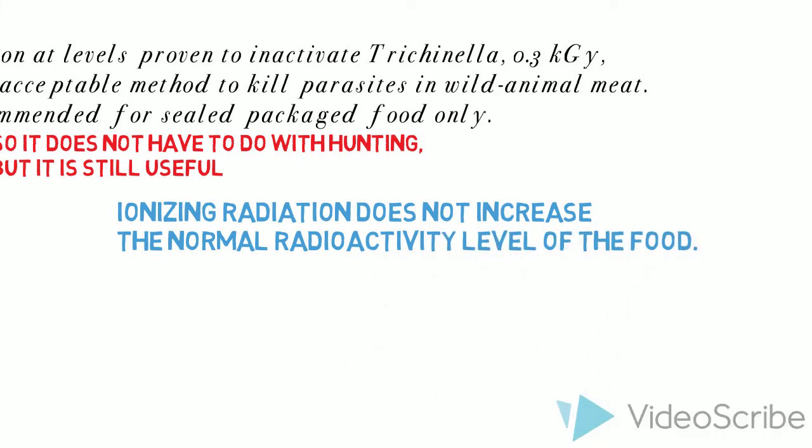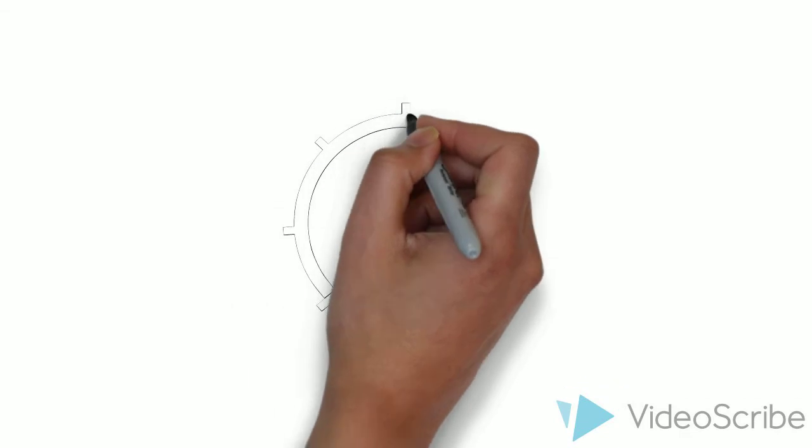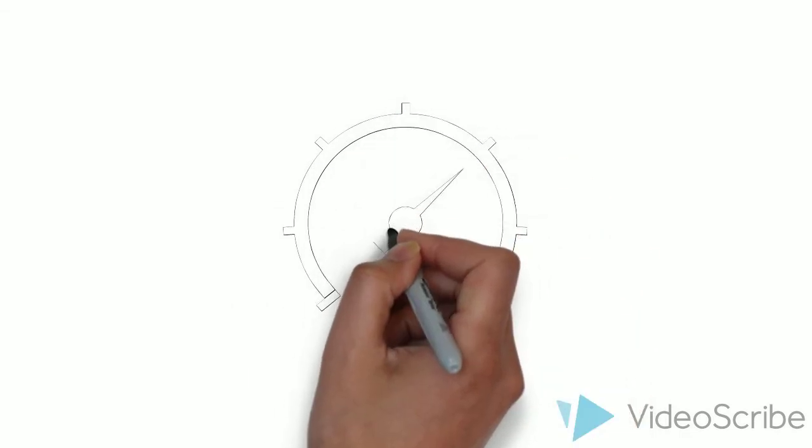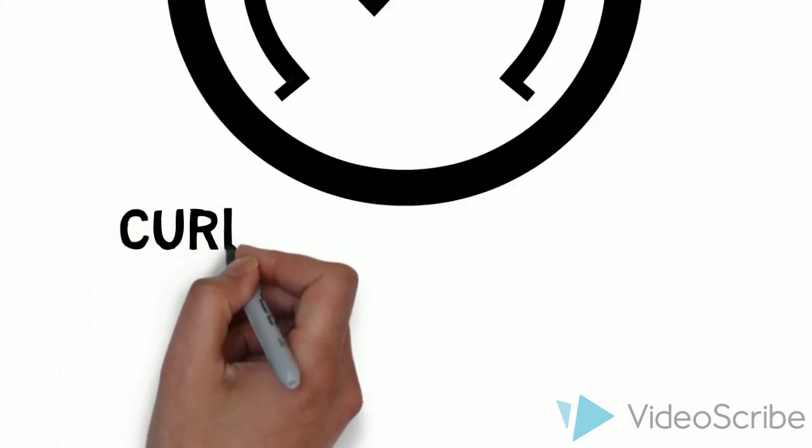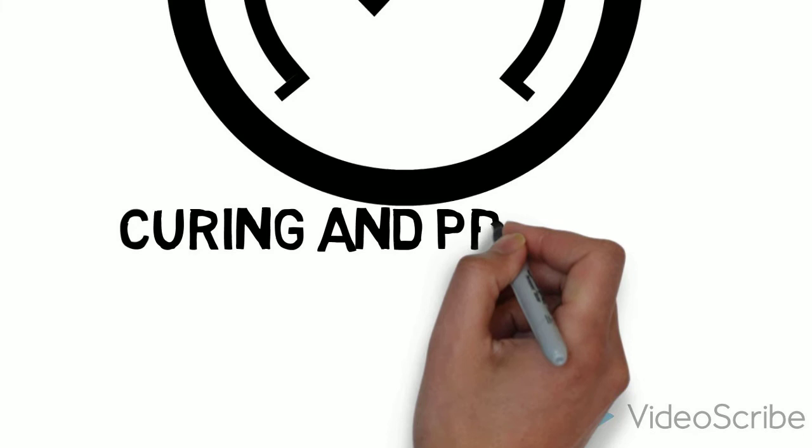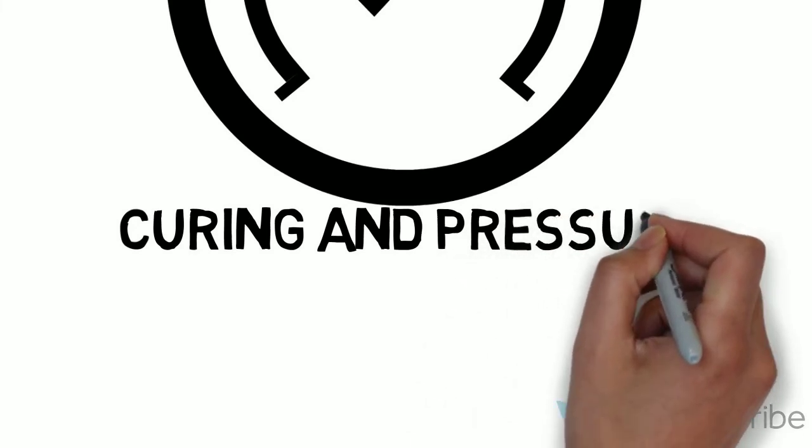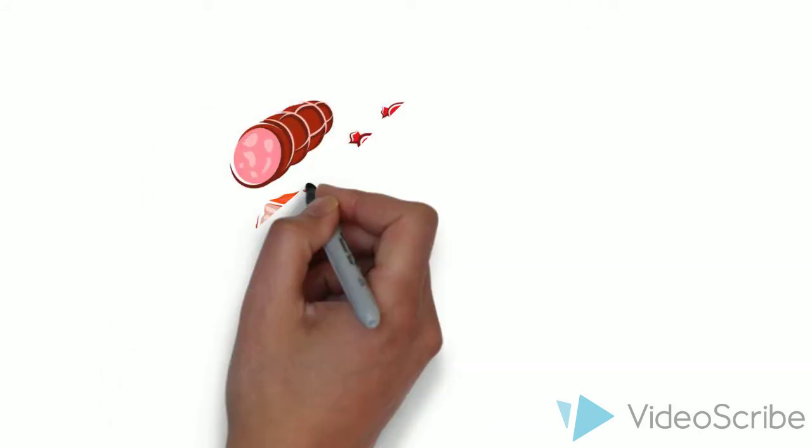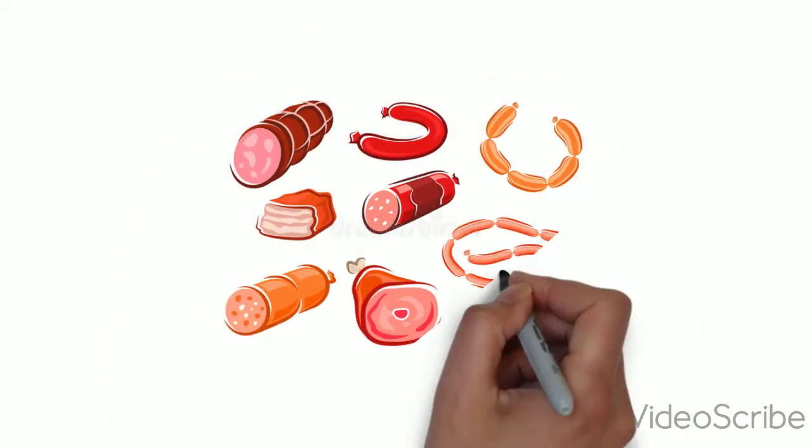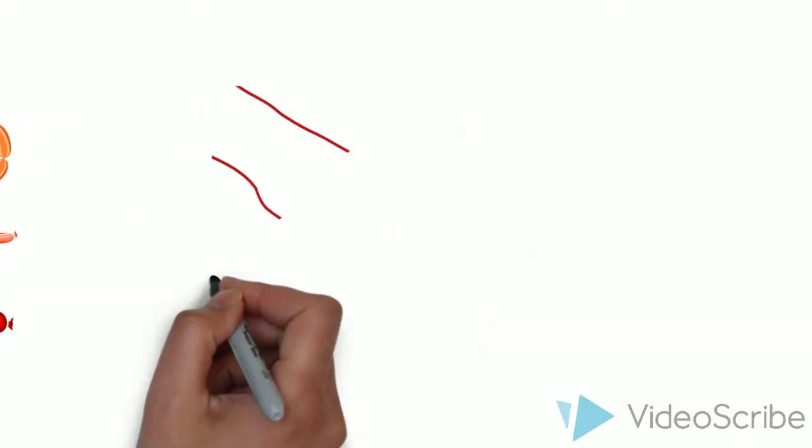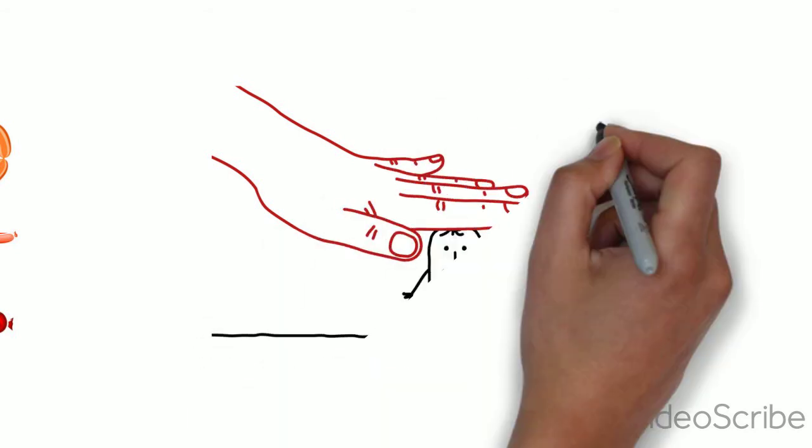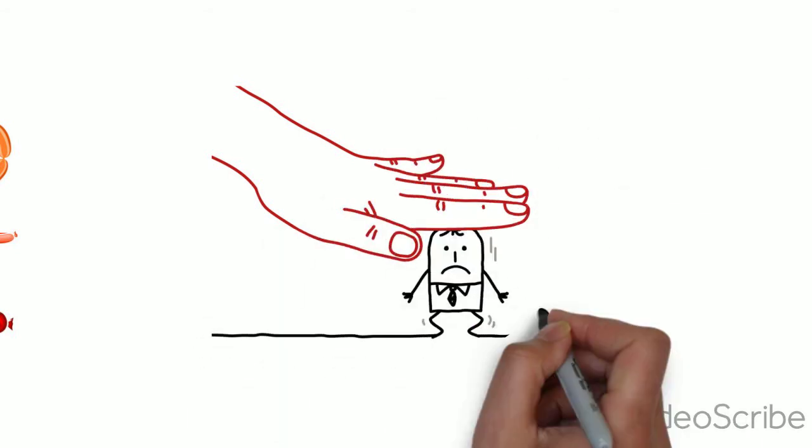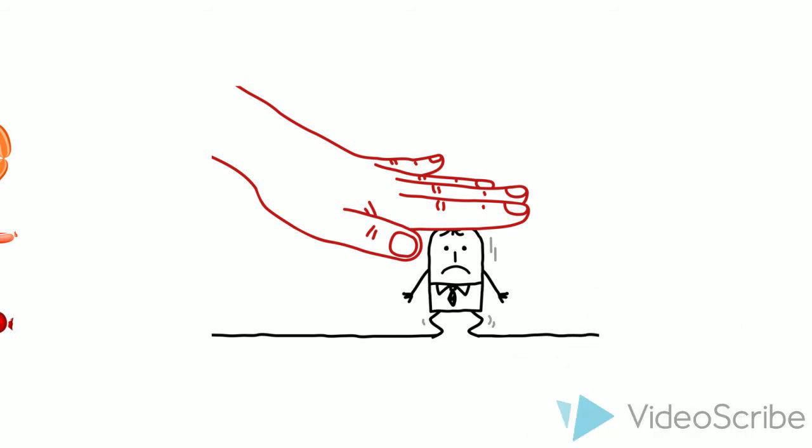Two other methods are sometimes used to inactivate Trichinella larvae in meat. It's curing and pressure. In case of curing, it's actually not really recommended to use this method to inactivate Trichinella because they are difficult to monitor and control. So, they should be used only after successful validation studies upon the use of strict process controls and protocols. In the case of pressure, in some studies, pressure has been validated to inactivate Trichinella, so it could be used.